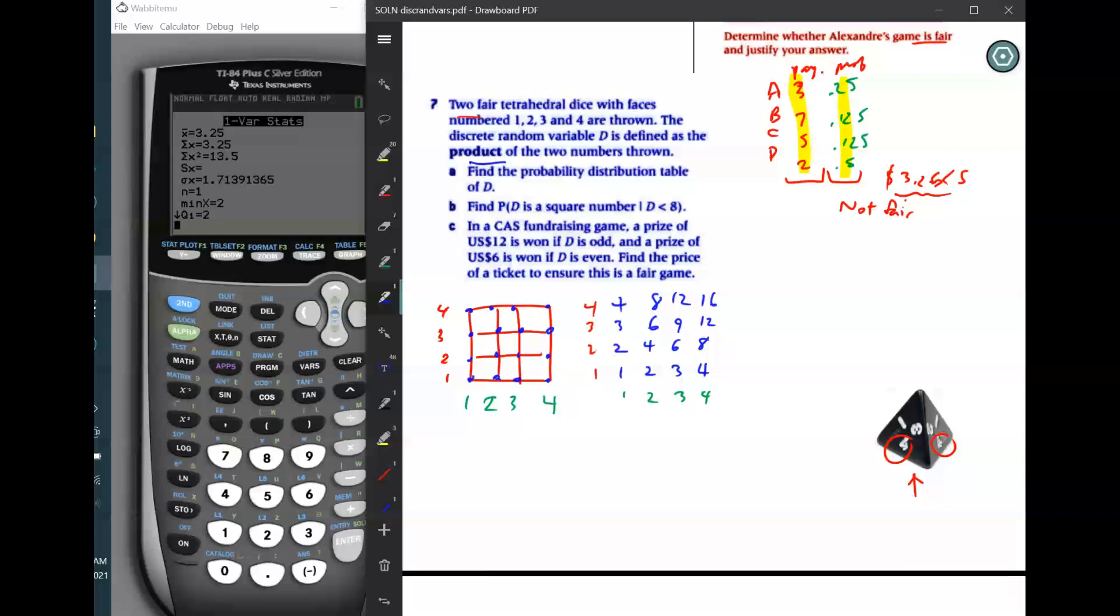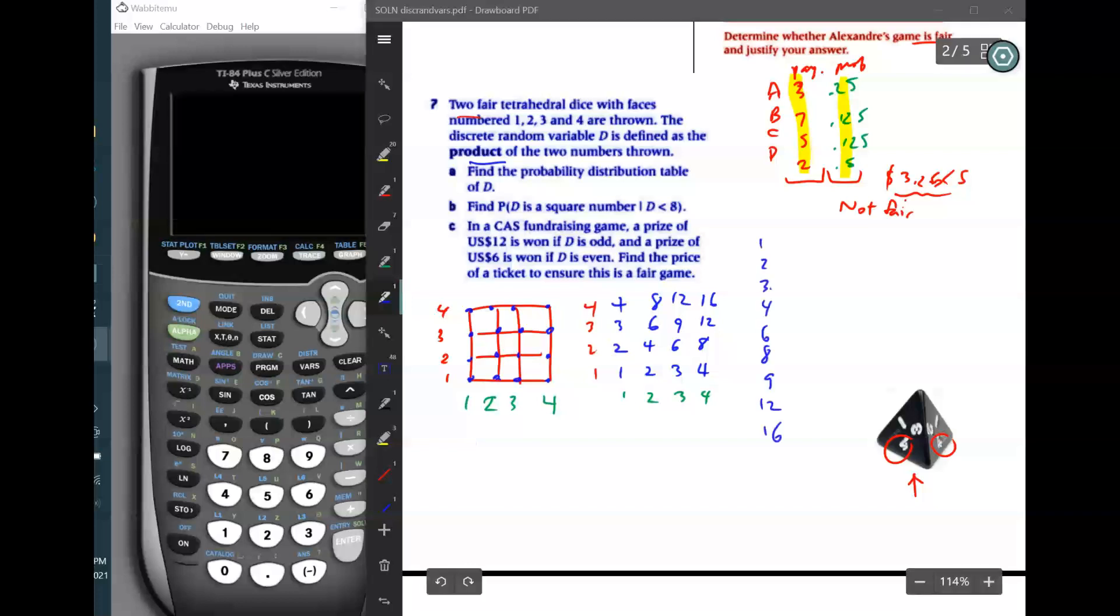And if we were going to actually make a table for this, we would put all the possible results. One, two, three, four. I moved it over here because I didn't have enough space. And then what I'm going to do is I'm going to figure out how many times each one of the products occurred in this table here. So, for example, let's see. In the case of eight, it happens two times. In the case of nine, it happens one time. In the case of 12, it happens two times. In the case of 16, it happens one time.